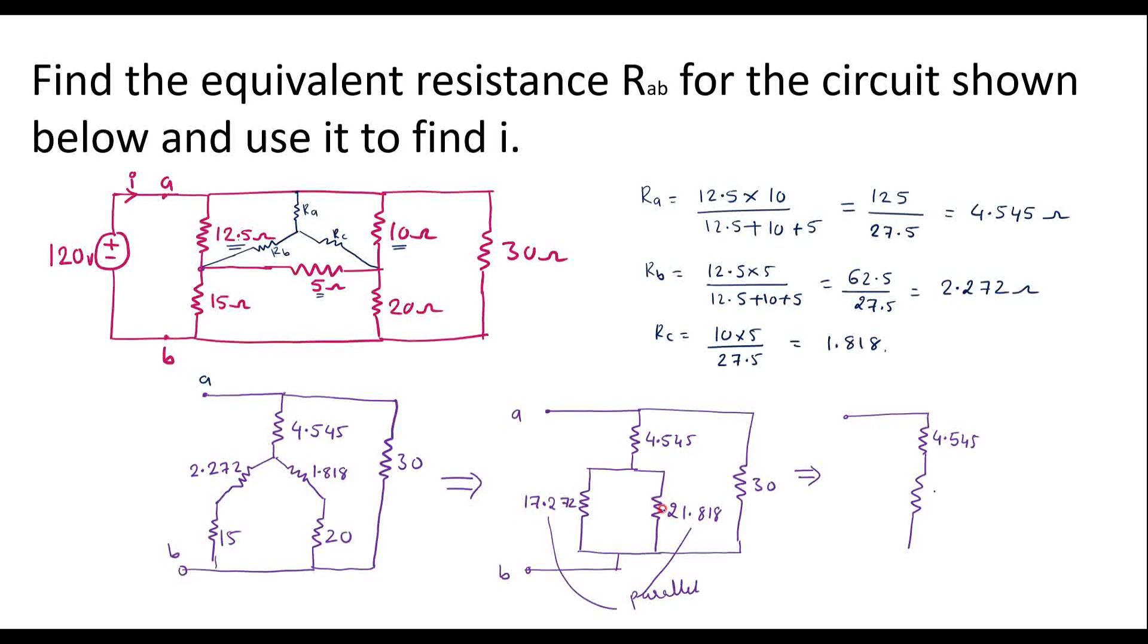It is 9.64 ohm. This is B terminal, this is A terminal. We have 30 ohm resistor in parallel with this.